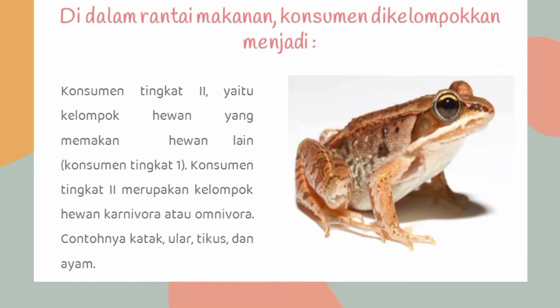Selanjutnya, konsumen tingkat 2, yaitu kelompok hewan yang memakan hewan lain atau konsumen tingkat 1. Konsumen tingkat 2 merupakan kelompok hewan karnivora atau omnivora. Contohnya adalah katak, ular, tikus, dan ayam.